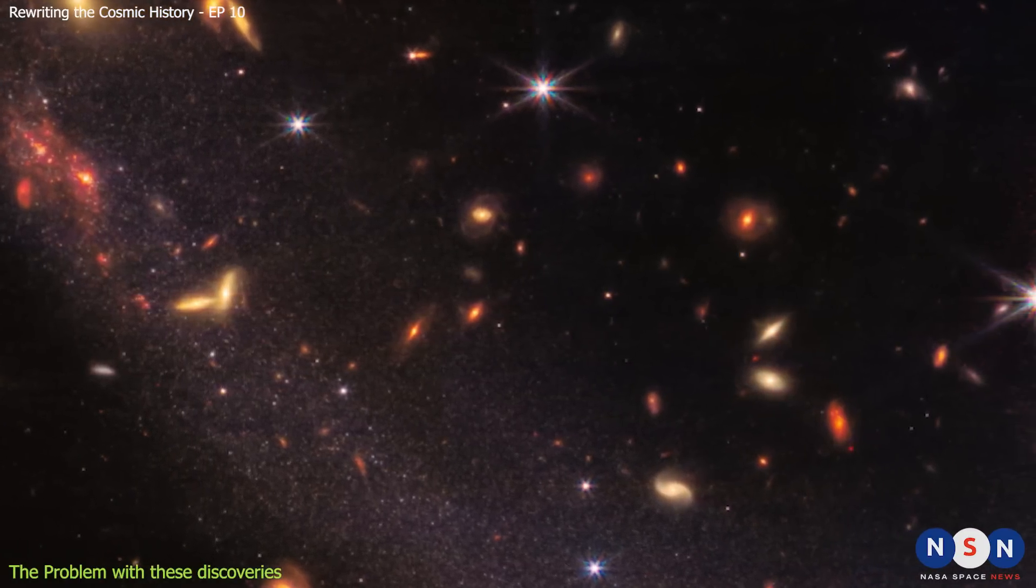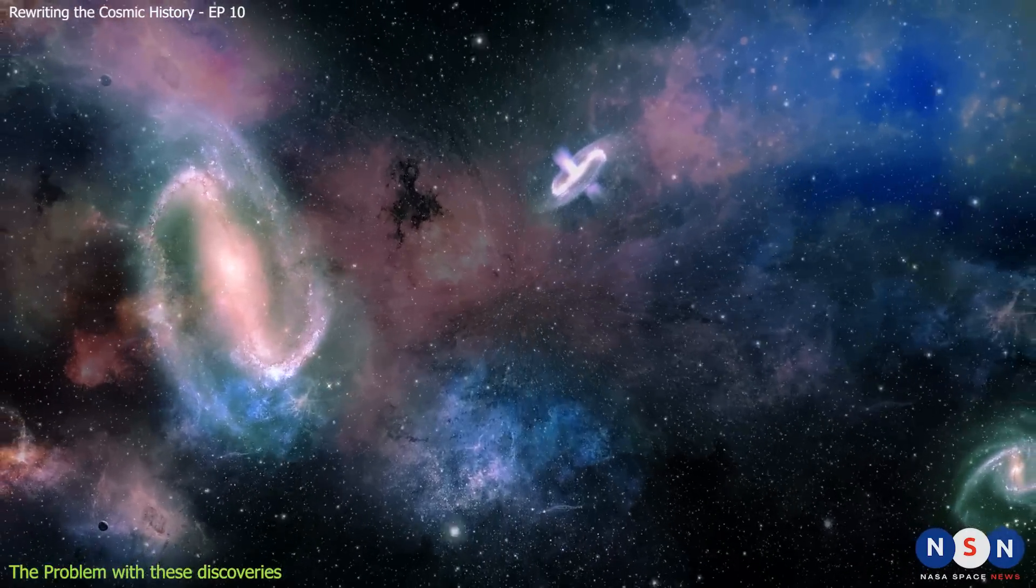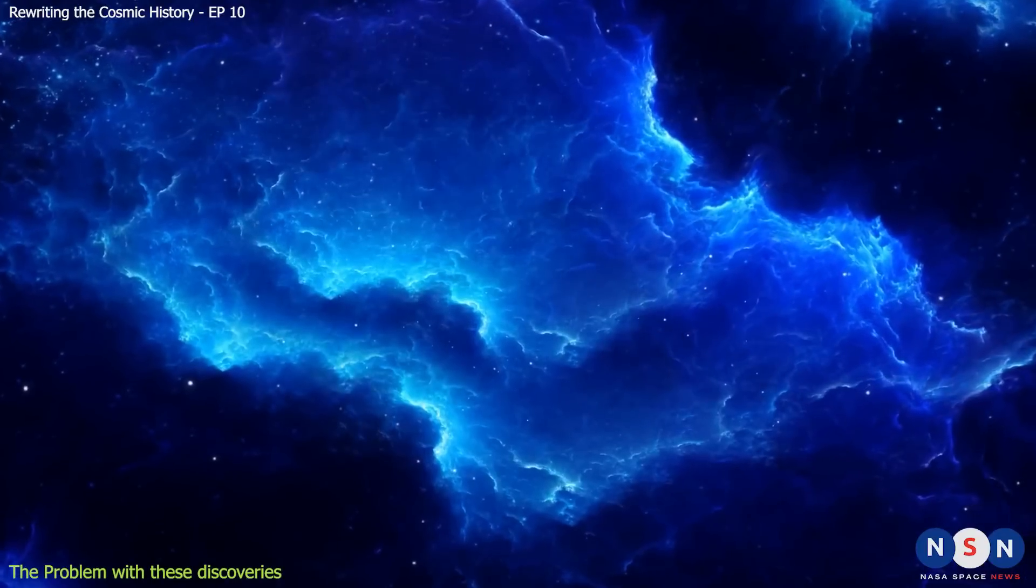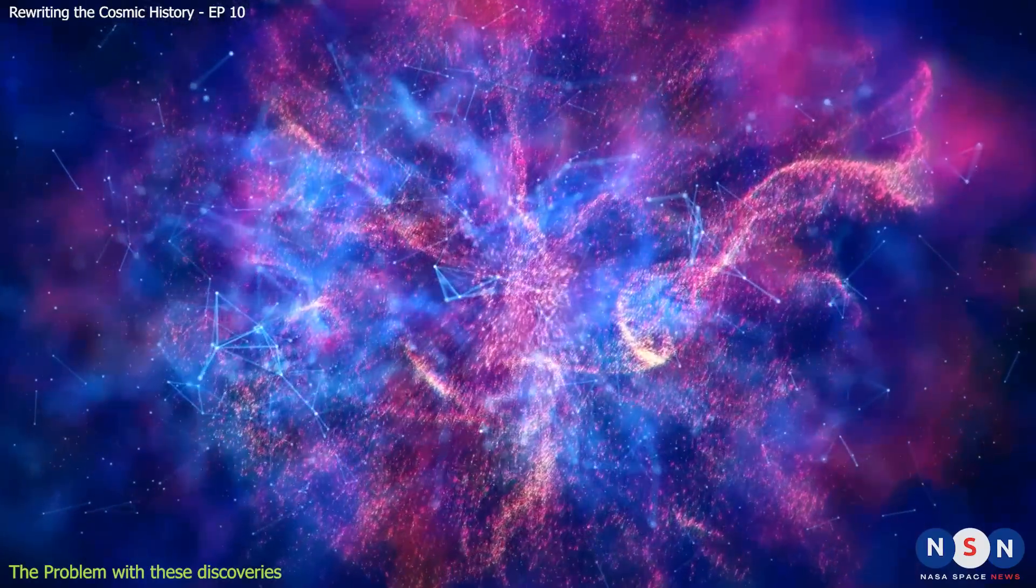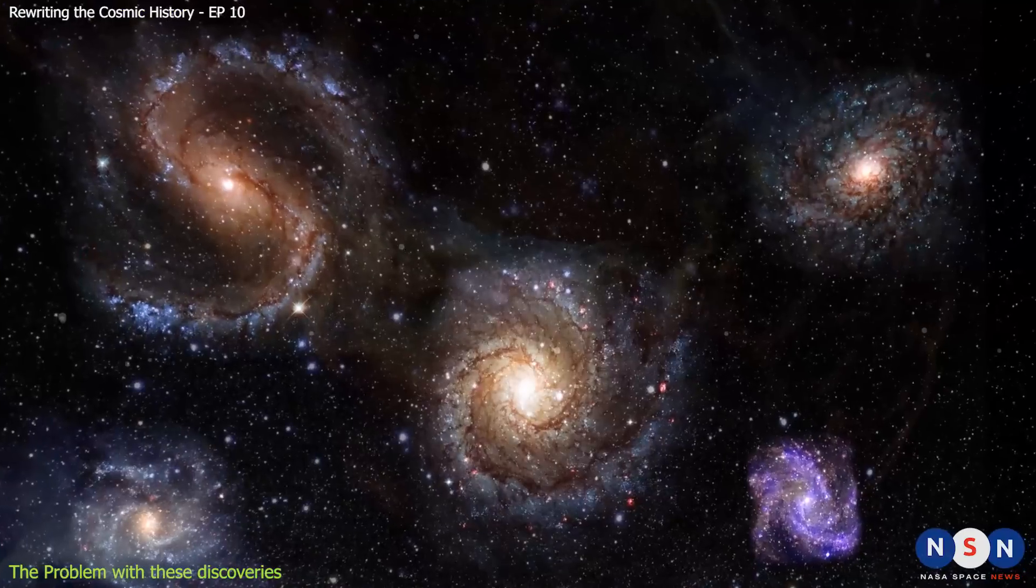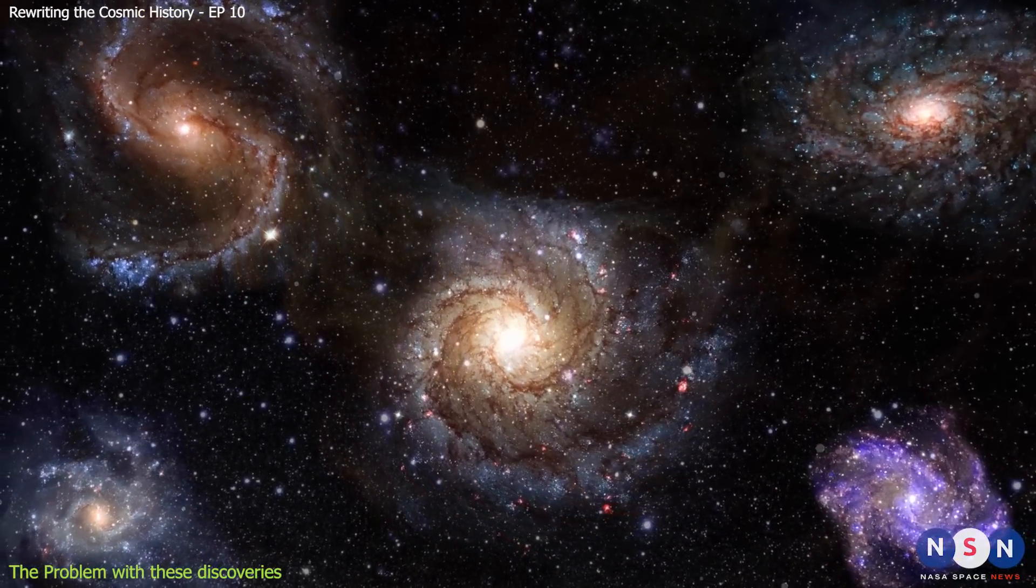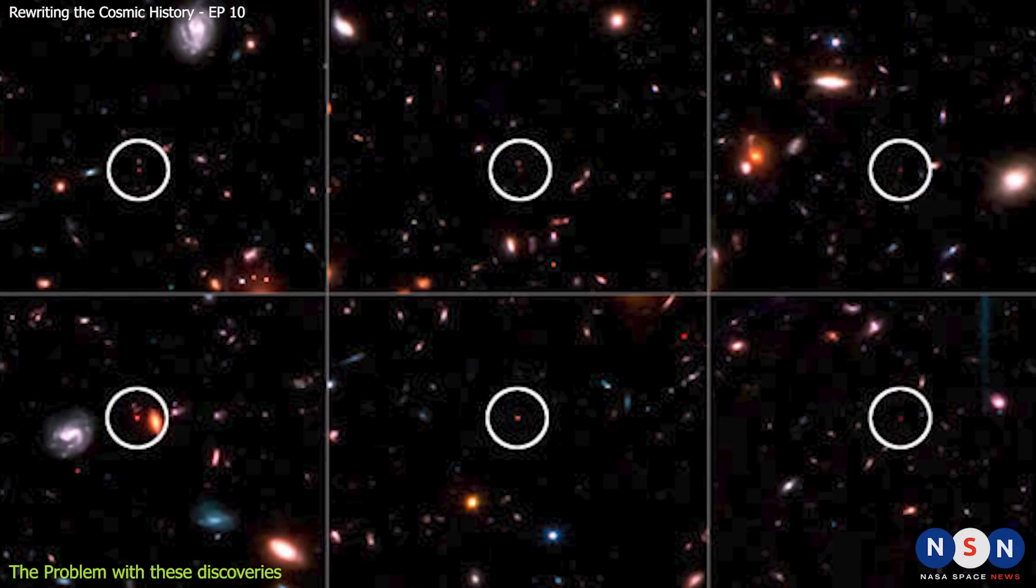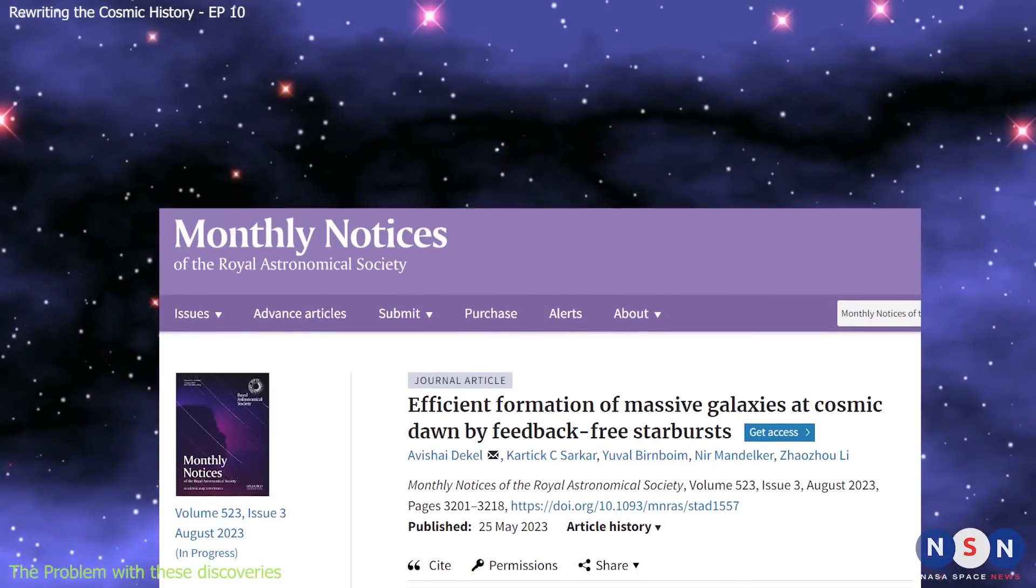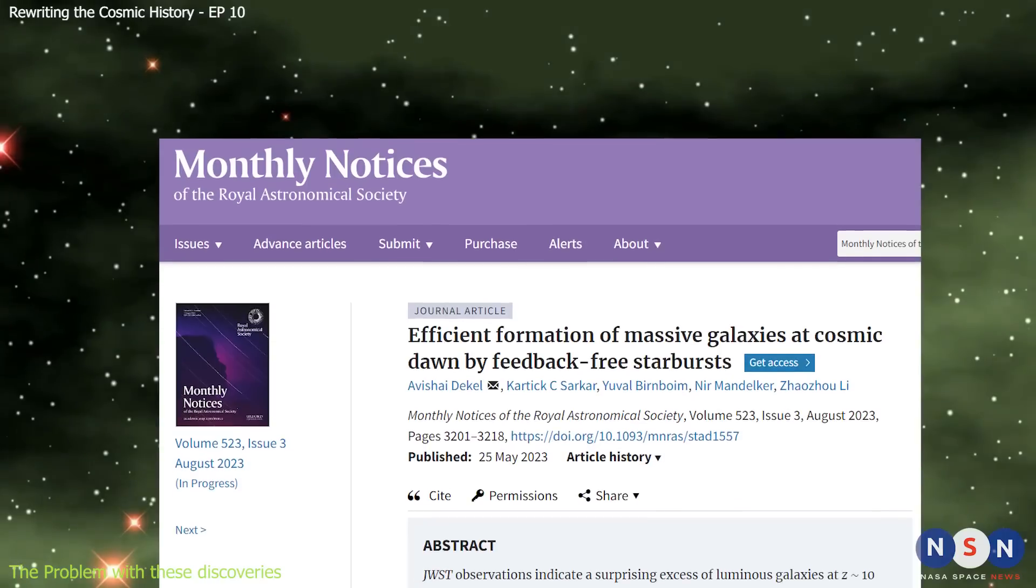All these discoveries are amazing and exciting, but they are also puzzling and problematic for our current model of galaxy formation and evolution. They show that there is much more diversity and complexity in the early universe than we thought, and that there are processes that we do not fully understand or account for. They also show that there is a connection between the formation of massive galaxies and the formation of large-scale structures in the universe, such as proto-clusters and filaments. How do we explain all these phenomena? How do we reconcile them with our model? Is there a simple and natural way to do that? This is where the new study comes in.